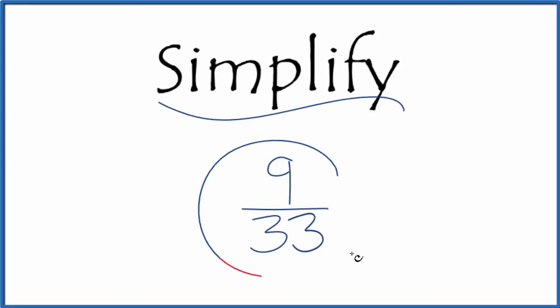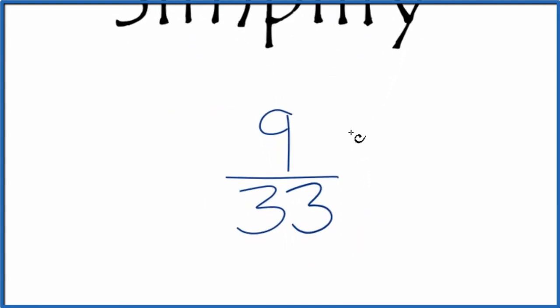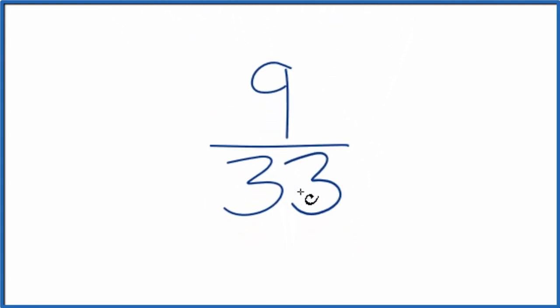Let's simplify the fraction 9 over 33. And here's how we'll do it. We're looking for a fraction that's equivalent to 9 over 33. It has the same value. It's just that we've reduced or simplified it to its lowest terms.